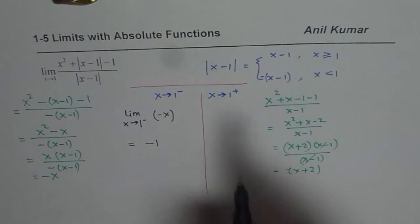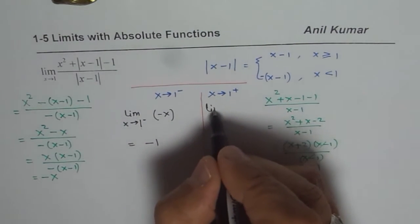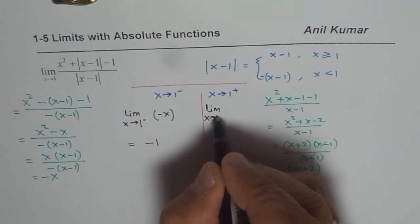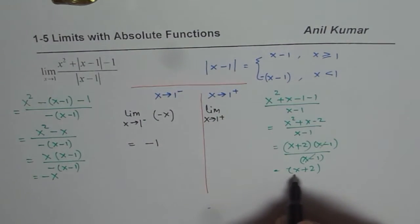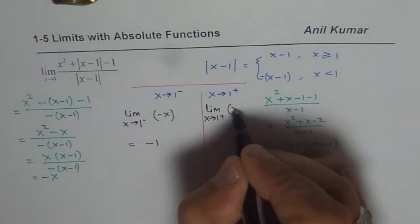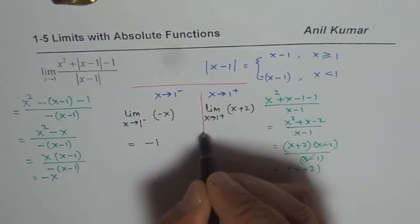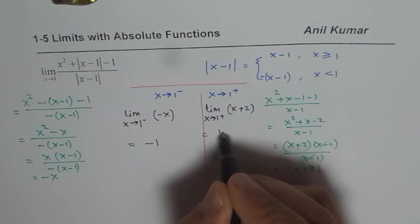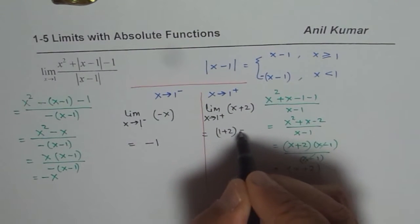So now if you are trying to find the right side limit, we will say limit when x approaches 1 from the positive side of this function, which is x plus 2. So if I substitute 1 here, what do I get? I get 1 plus 2, which is equal to 3.